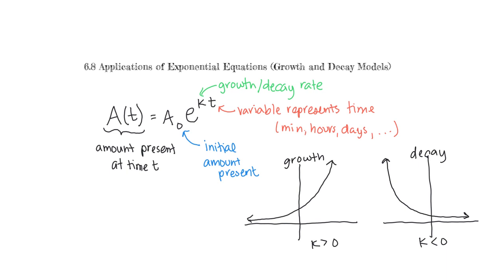How steeply those rise or fall depends on how big K is. The x-axis represents time — it's really our t-axis — and the y-axis represents quantity or amount present. With the growth function, the further time goes, the more of the substance we have. But for the decay function, the substance becomes less and less as time goes on.